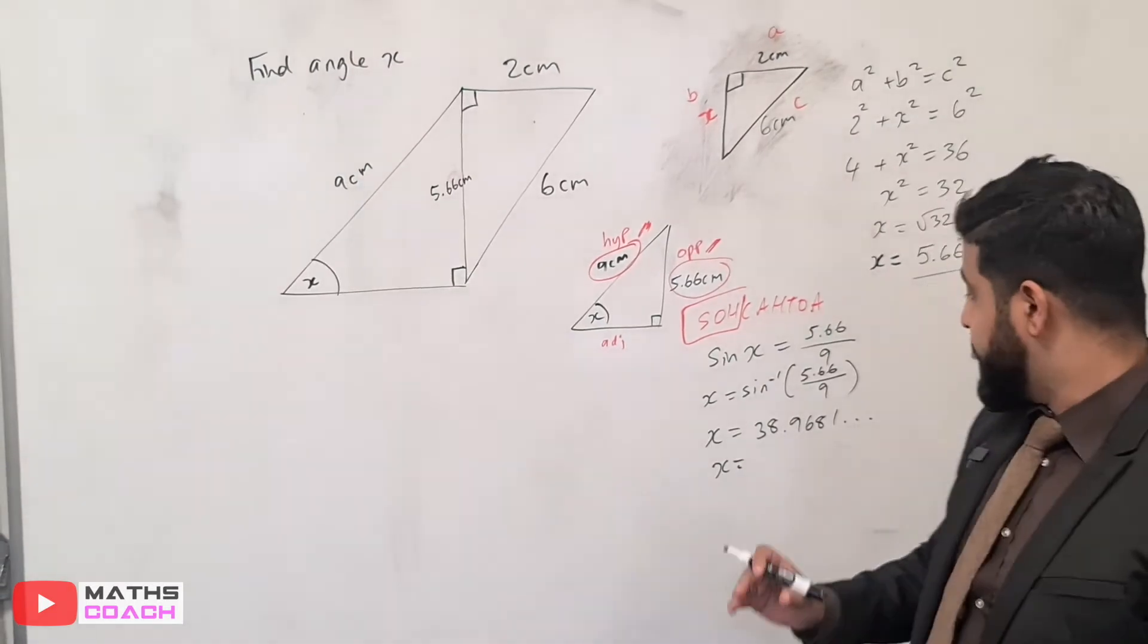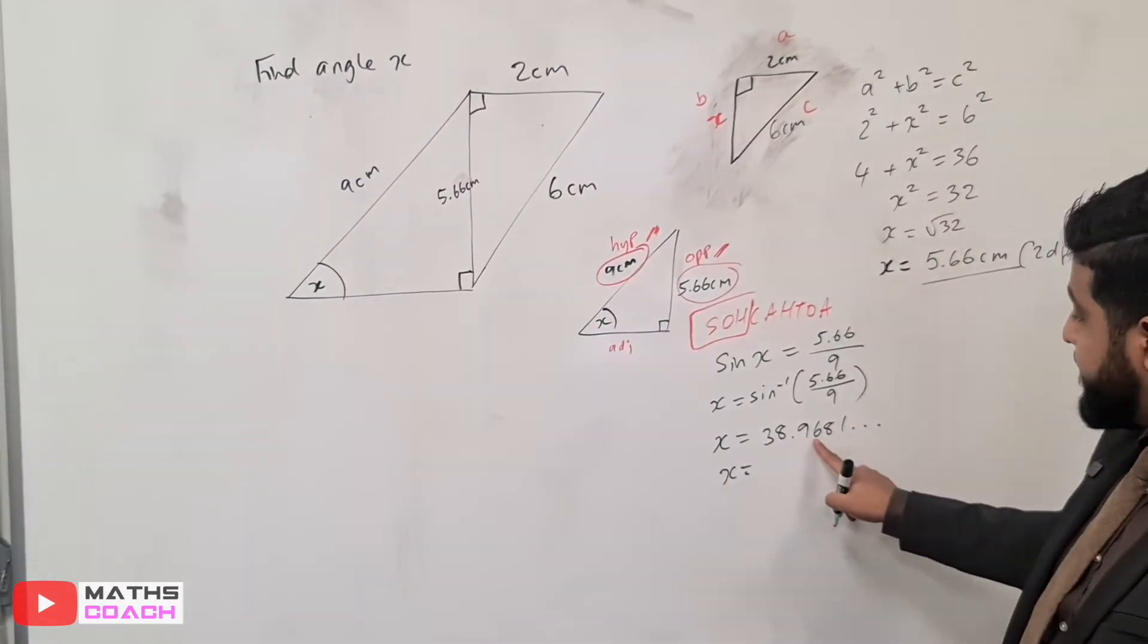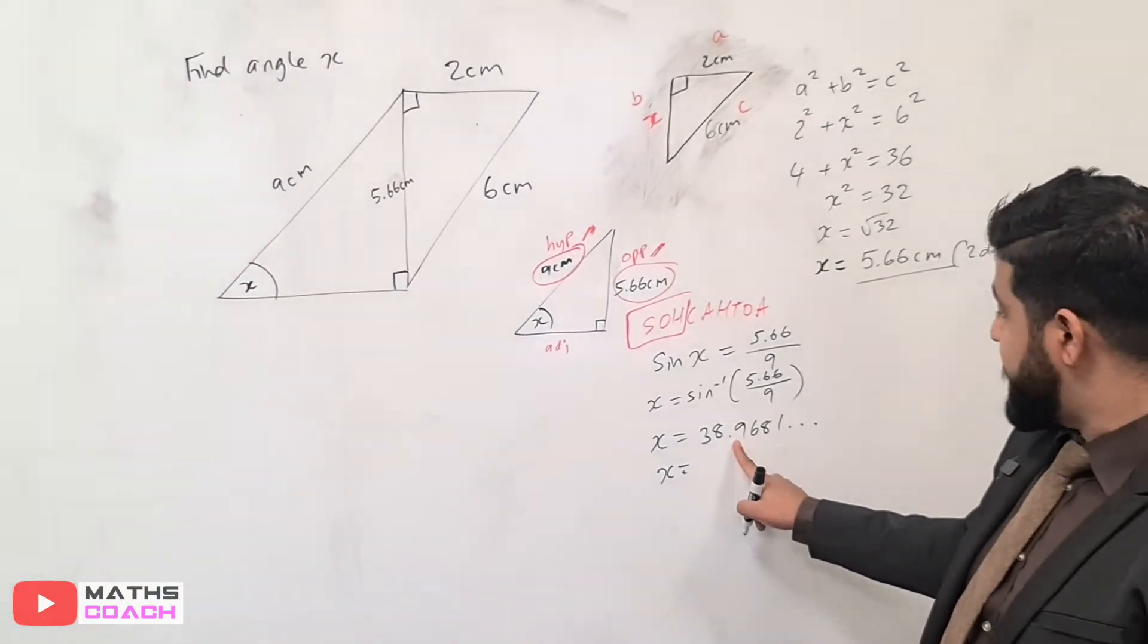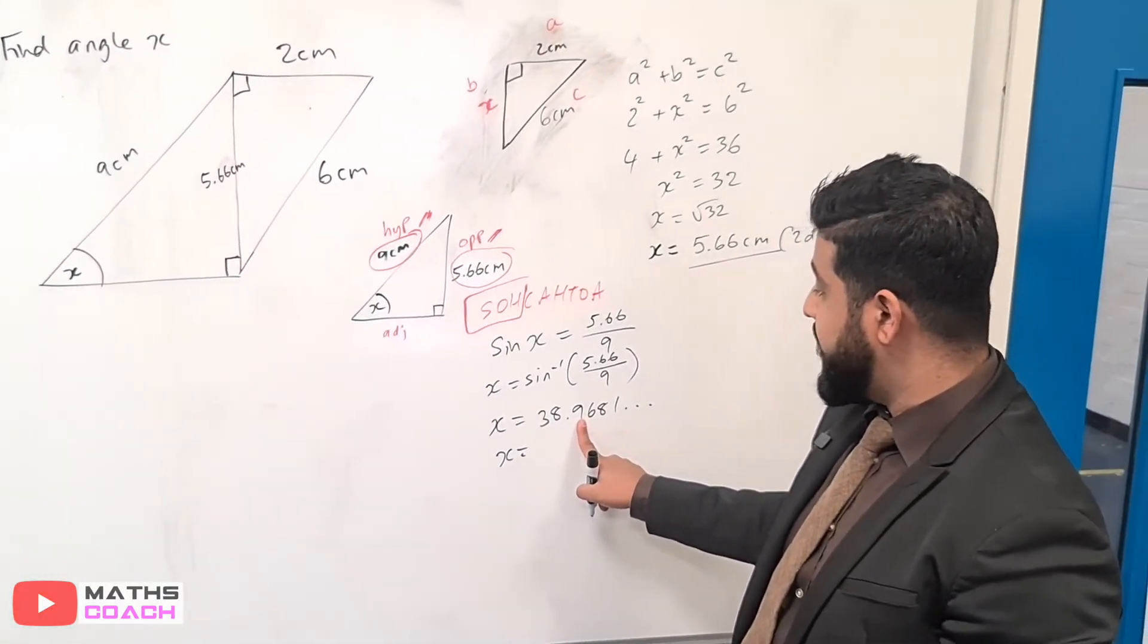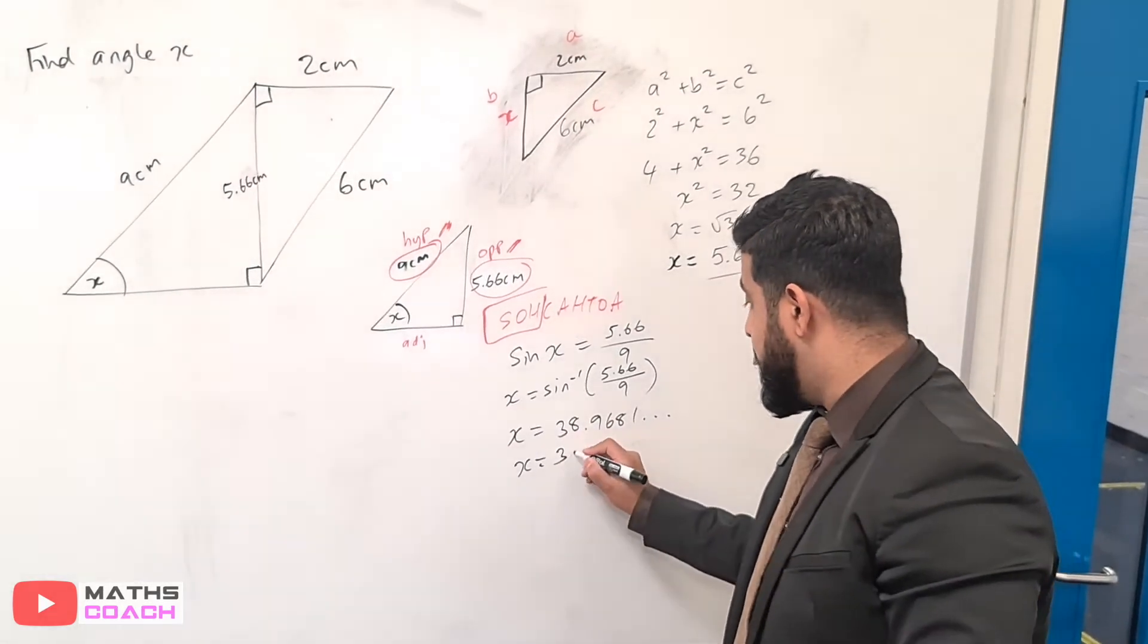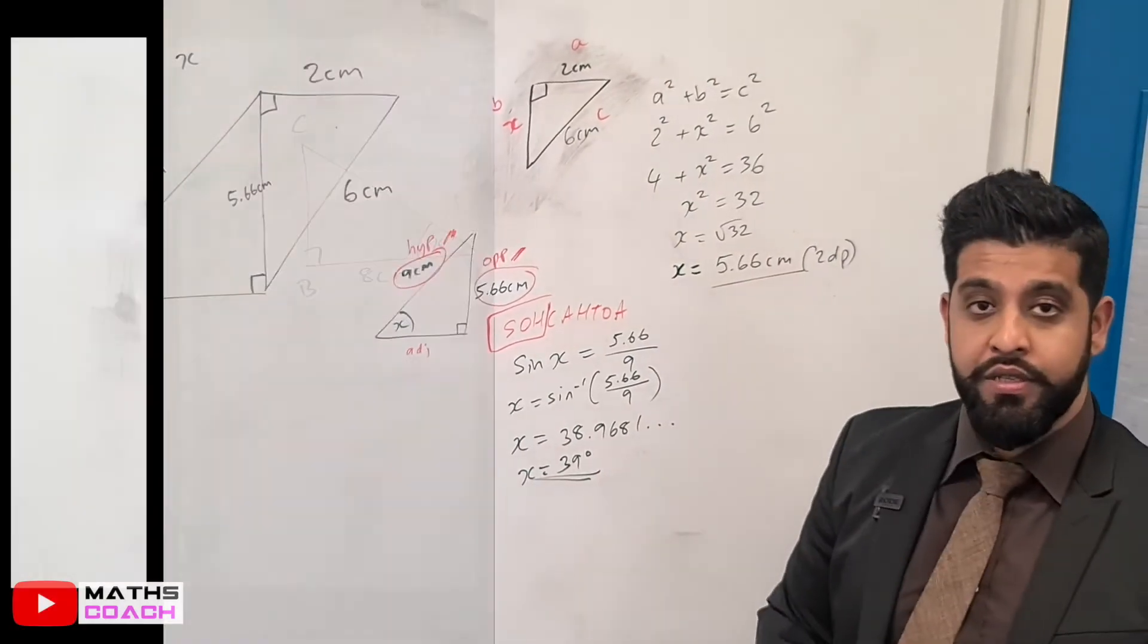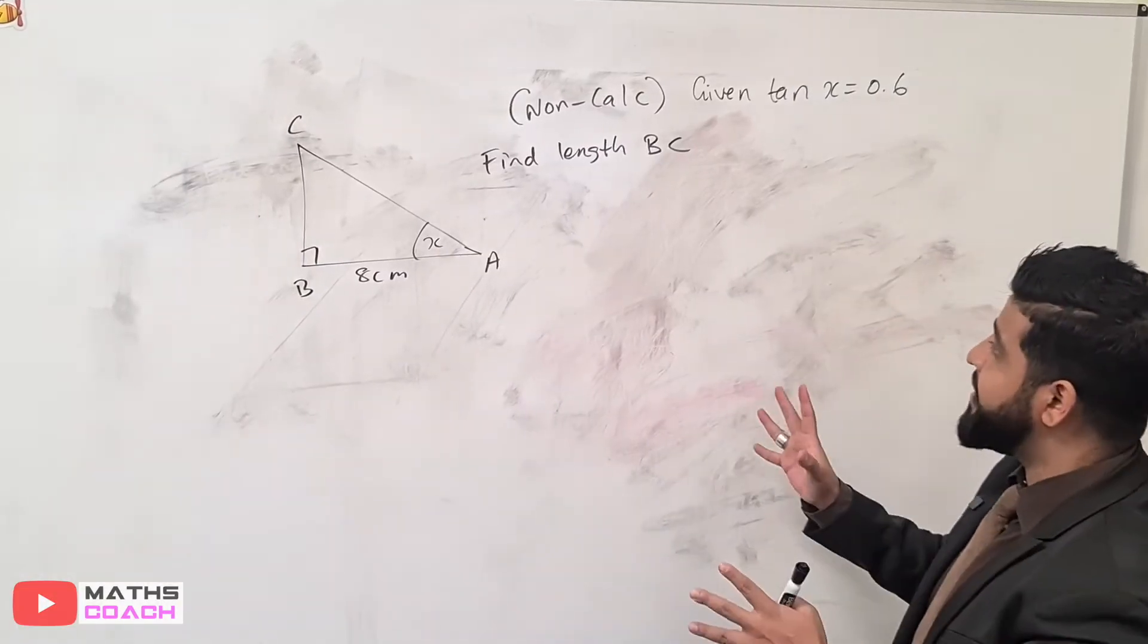We can knock that into our calculator, the inverse of sine. And we get 38.9681 dot dot dot. It's an angle, so we can round this to an appropriate degree of accuracy. Notice here, if we were to round to one decimal place, this will increase that 9 to become a 10, having a knock-on effect on this. So overall, we can round to 39 degrees.